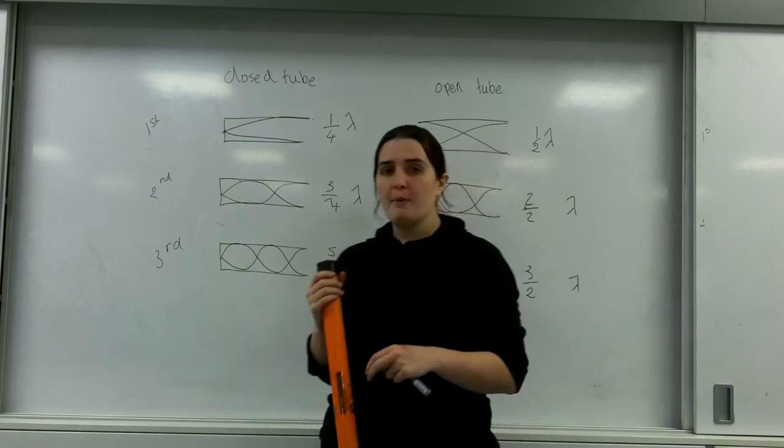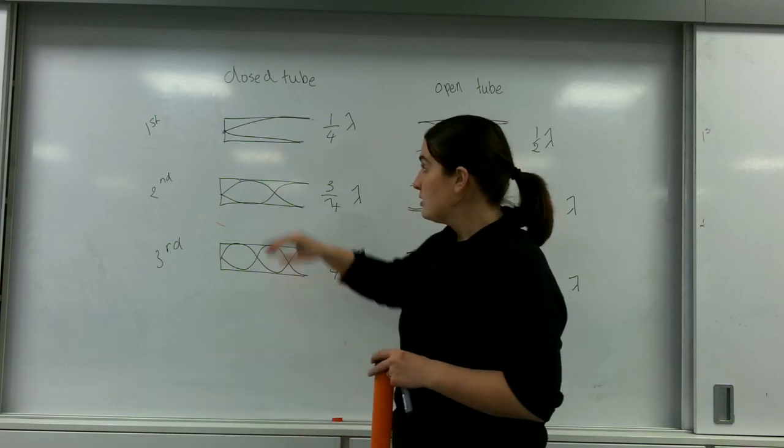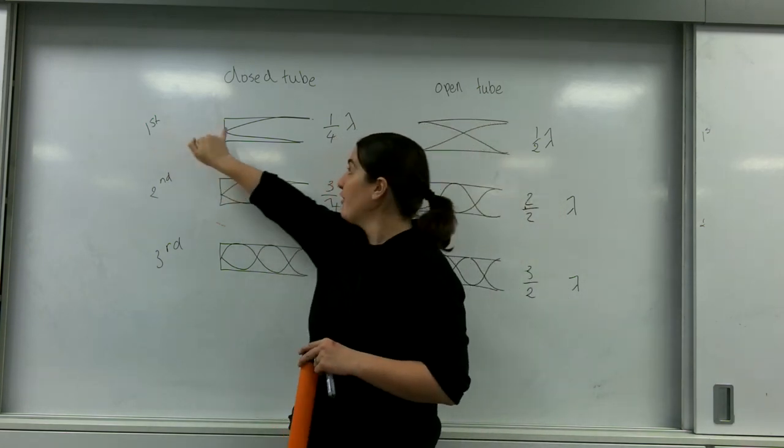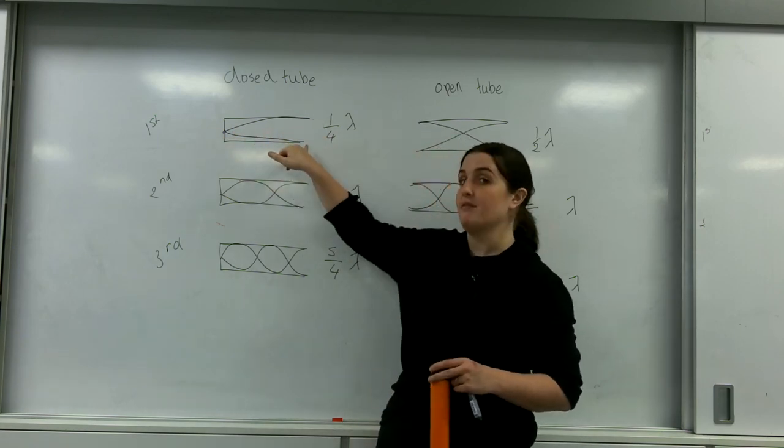We're going to talk about closed tubes first. In the first harmonic, I have my reflection point and I get to the first anti-node. As you can see, this is quarter of a wavelength.